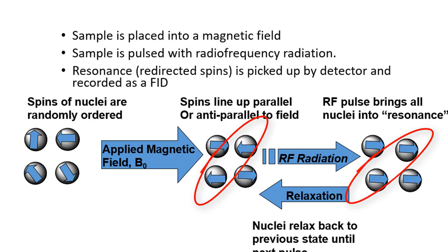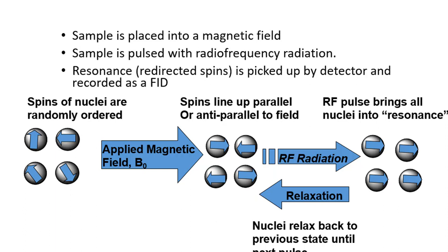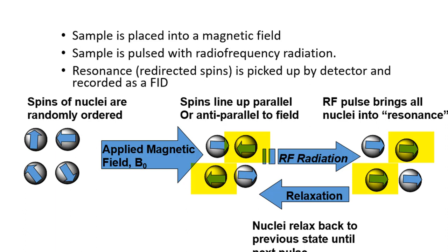Here we have the random spins; we put the sample into the magnetic field and some spins line up with the field while others go opposite. You pulse it with radiation to force the spins going opposite to align with the field. In between pulses, those spins relax back, and when they do, they give off energy — that's what's picked up by the NMR detector. Normally a proton NMR uses 16 pulses.